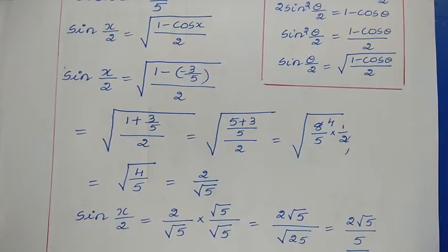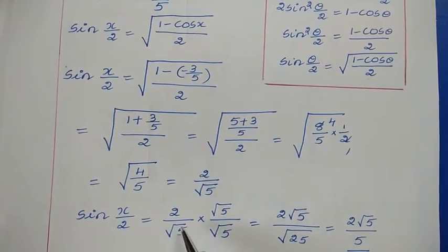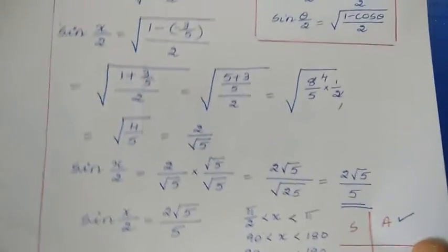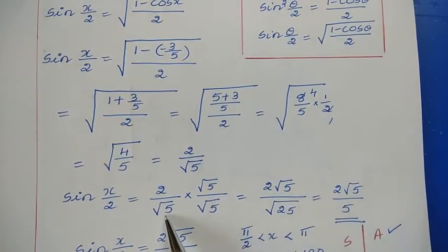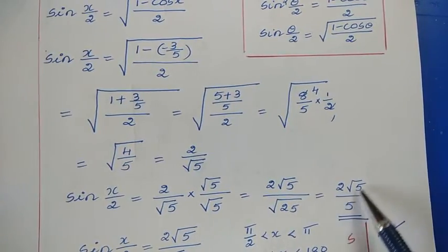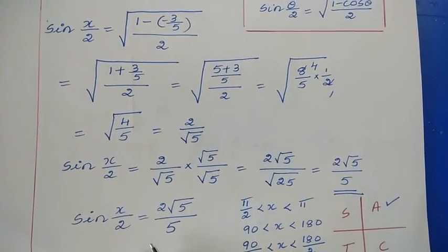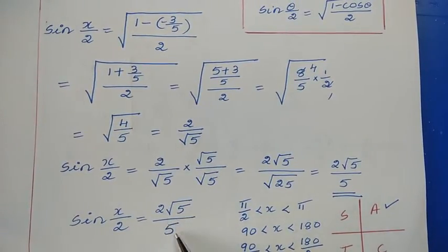Rationalize by multiplying numerator and denominator by √5: (2/√5) × (√5/√5) = 2√5/√25 = 2√5/5. So sin(x/2) = 2√5/5.